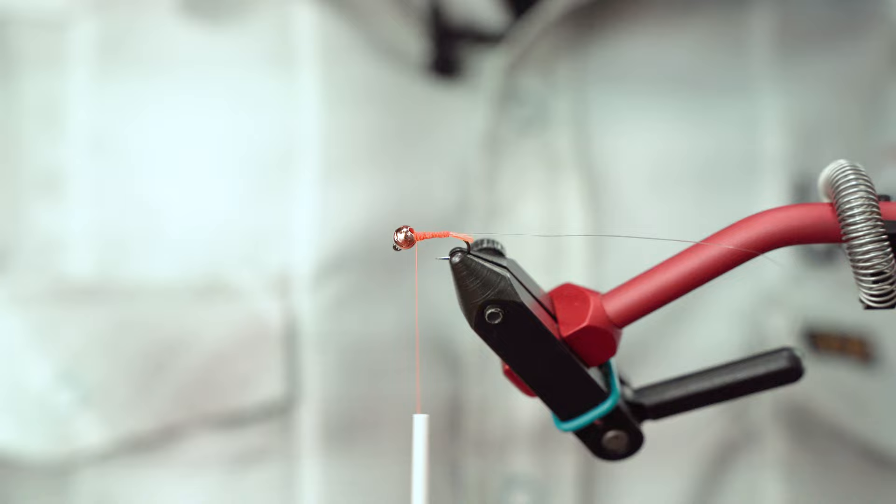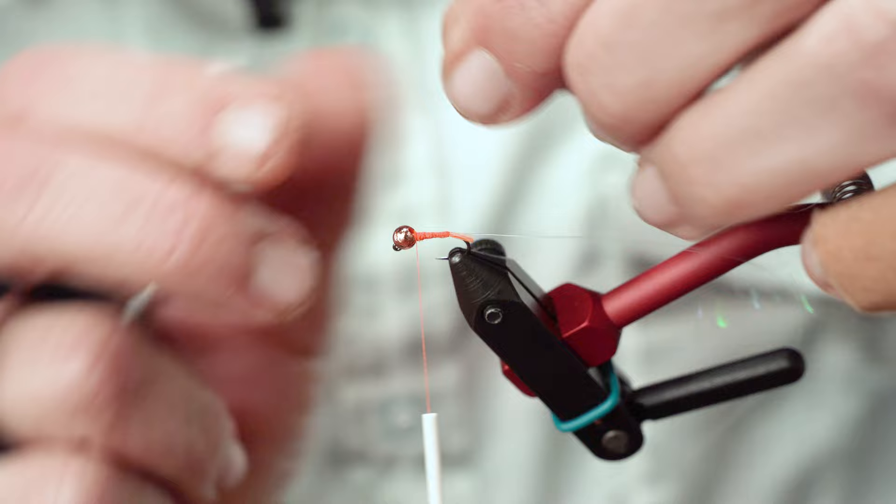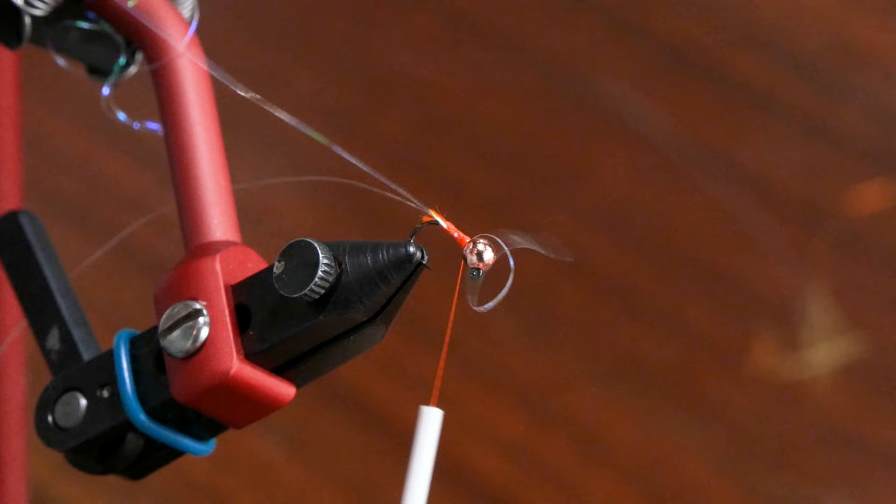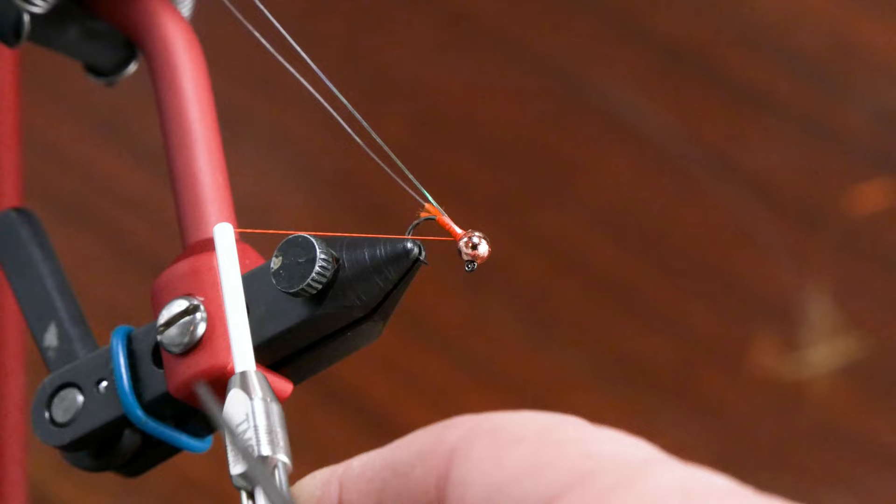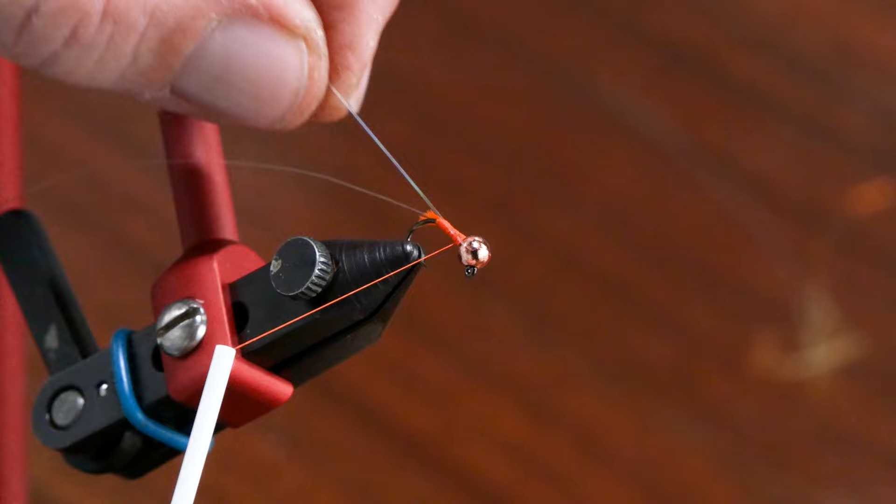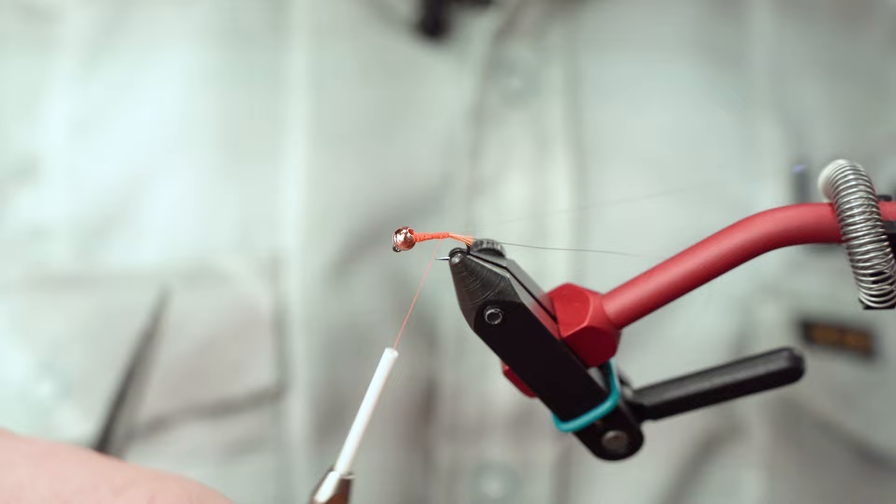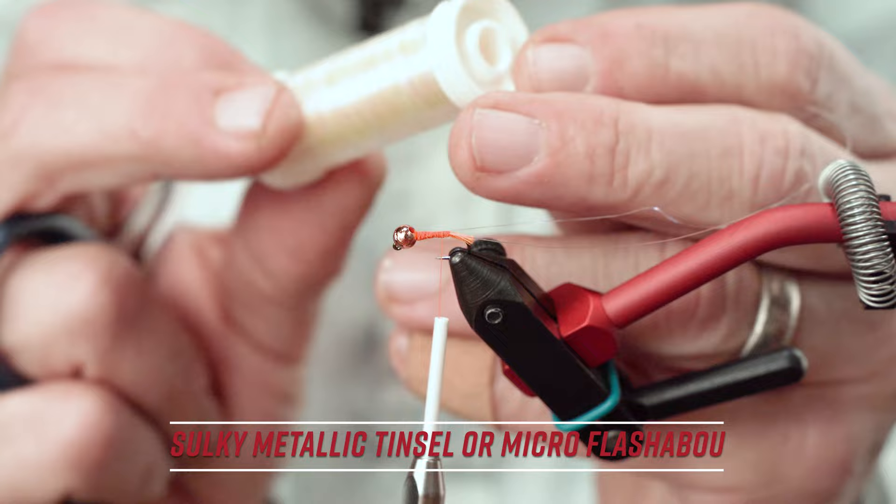And I'm going to tie in some Micro Flashaboo. Now you'll find Micro Flashaboo readily available at your local fly shop. Not so readily available for most cats, depends on your location, is Sulky. And Sulky is nothing more than a Micro Flashaboo product that's sold in fabric stores or sewing stores, and it's nothing more than a Micro Flashaboo that's got maybe a little more stretch to it, in my opinion. But that doesn't really matter. It's got a really wide spool. This is the Silver Metallic.